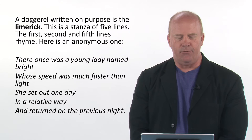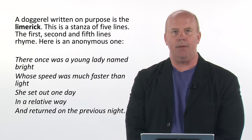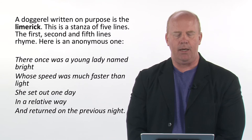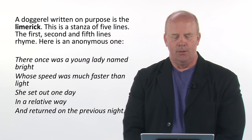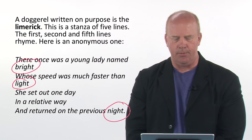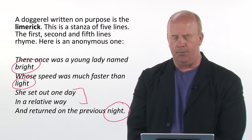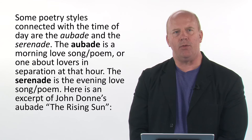A doggerel written on purpose is the limerick, which I'm sure you've heard a lot of. This is a stanza of five lines where the first, second, and fifth lines rhyme. Here's an anonymous one: 'There once was a young lady named Bright, whose speed was much faster than light. She set out one day in a relative way, and returned on the previous night.' You can see: bright, light, and night rhyme, and day and way rhyme.